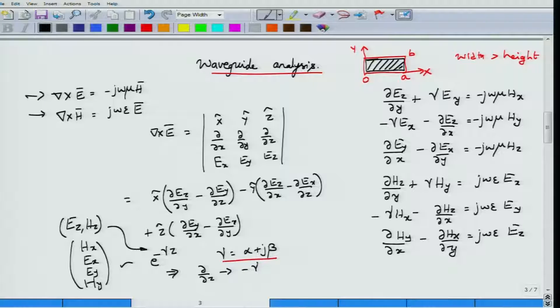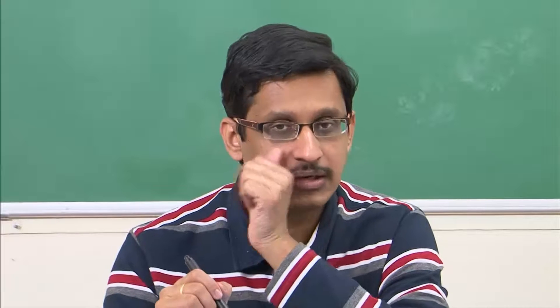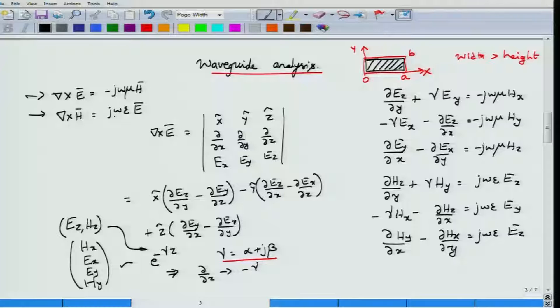I am using phasor quantities without explicitly indicating the time dependence. We are only interested in the spatial dependence because the time dependence is taken in phasor form. So del/del_t becomes j*omega, and integrals become 1/(j*omega). We also assume that mu and epsilon are constants unless specified otherwise.